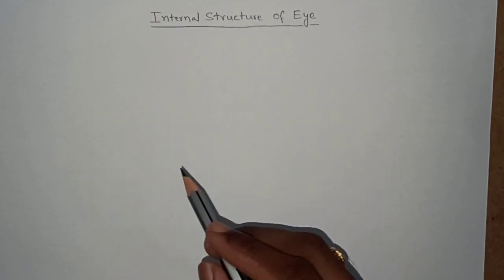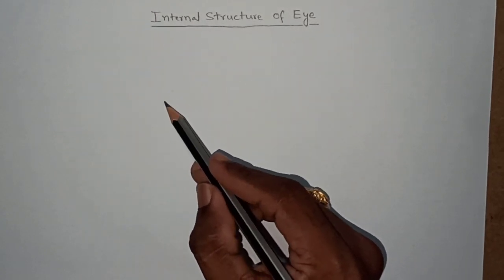Hi friends, in this video we are going to learn the internal structure of the eye, how to draw the internal structure of the eye. First of all, we have to draw a rough circle.